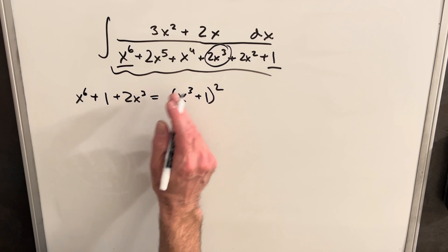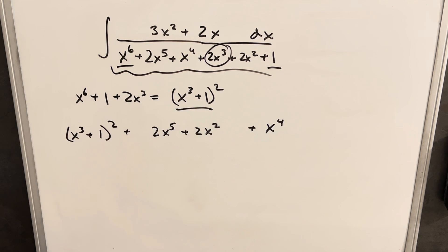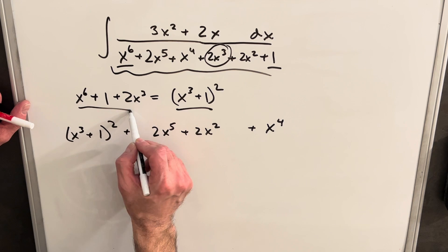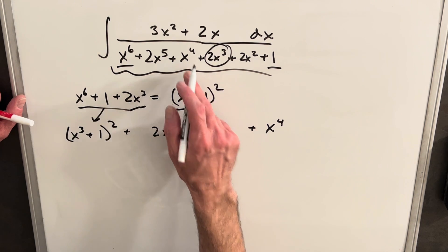so then we can actually take three of our terms and write it this way. Okay, so now we have our x to the 6, 1, and 2x cubed in our squared term here, and I took the x to the 4th,